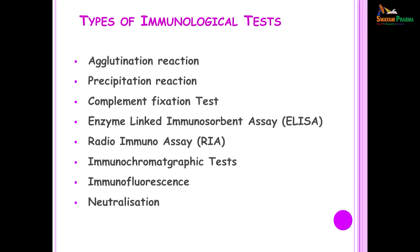Now let us look at the types of immunological tests. Some of them you need to know because you need to know the principles of the reactions, how they occur, and how long they take to perform. These are the tests which will help you later on when you become clinicians — you need to know which test to order for which particular disease. We will start with the agglutination reaction.